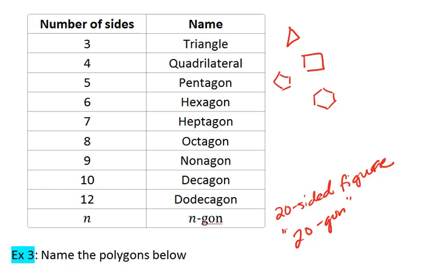So make sense of these names. Make it so that you can easily remember them. Associate them with other words that also use these prefixes. Like decagon, think of decade. We already know decade means 10 years, so decagon means 10 sides.